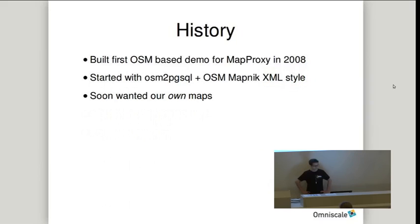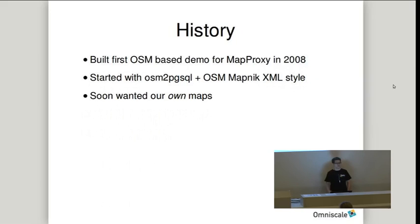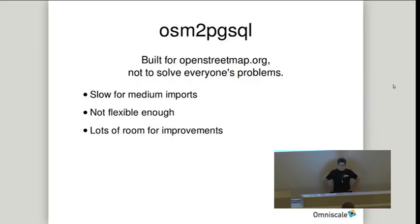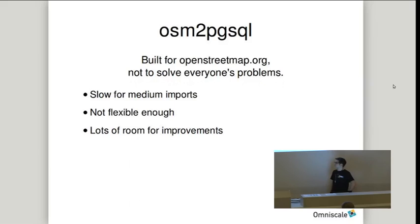A bit about the history. We started to use OSM in 2008 when we built our first OpenStreetMap-based demo for MapProxy. We started with OSM to PGSQL and used the official OpenStreetMap Mapnik XML style for our first maps, but soon we wanted our own maps with our own styling. We noticed that OSM to PGSQL was built for OpenStreetMap.org — it was not built to solve everyone's problem. For us it was too slow for medium imports like Germany or Europe, not flexible enough, and we found there was still lots of room for improvement.